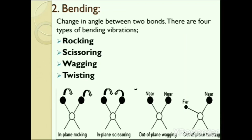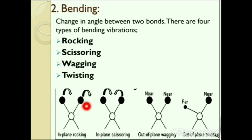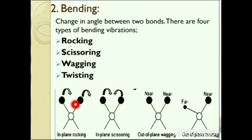In rocking, wagging or twisting, the bond lengths within the group do not change. Rocking is distinguished from wagging by the fact that the atoms in the group stay in the same plane. Rocking and scissoring are in-plane vibrations, while wagging and twisting are out-of-plane vibrations. In rocking vibration, the bond angle is maintained but both bonds move within the same plane, as shown in this picture.